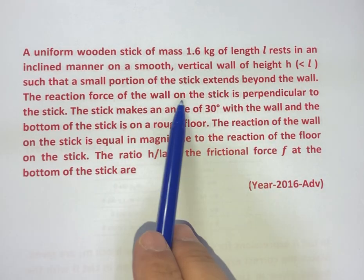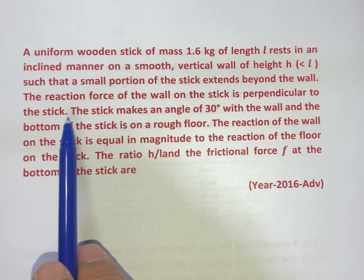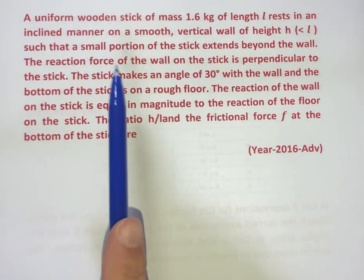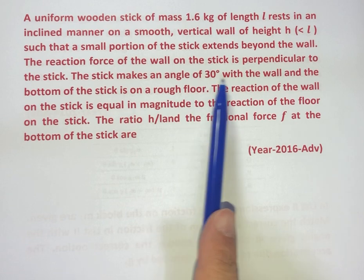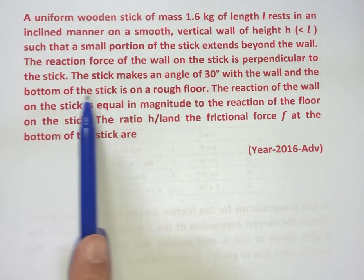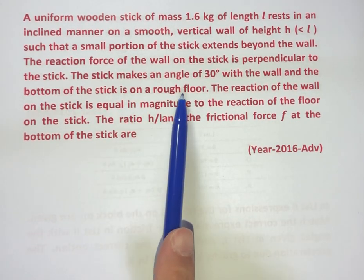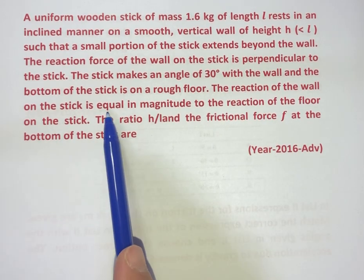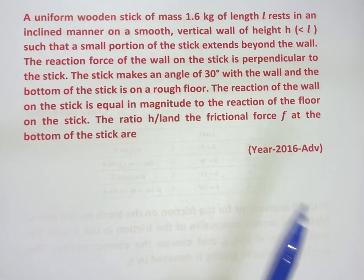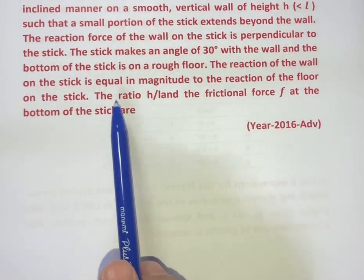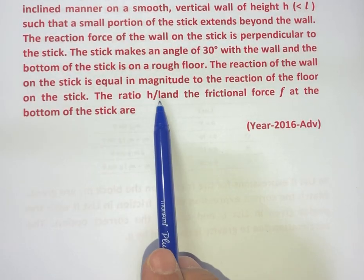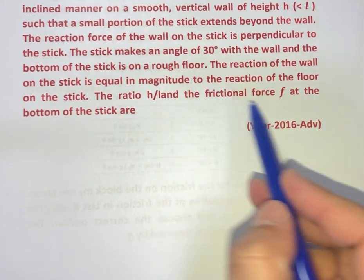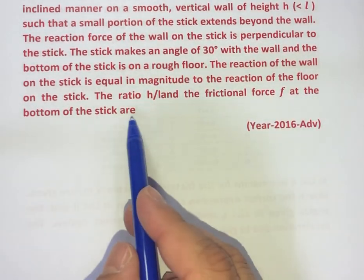The reaction force of the wall on the stick is perpendicular to the stick. The stick makes an angle of 30 degrees with the wall and the bottom of the stick is on a rough floor. The reaction of the wall on the stick is equal in magnitude to the reaction of the floor on the stick. The ratio h upon L and the frictional force F at the bottom of the stick are to be found.